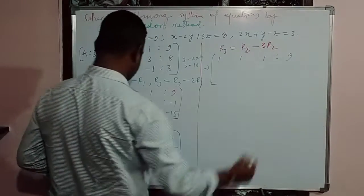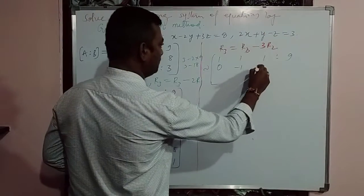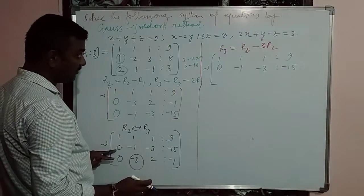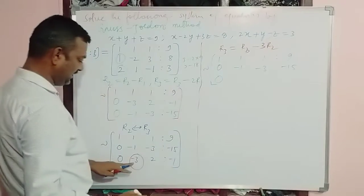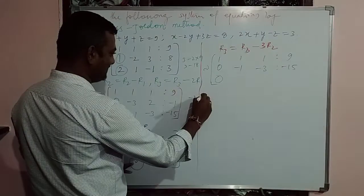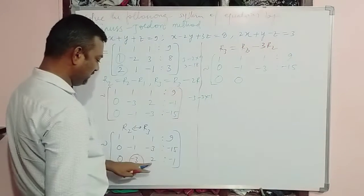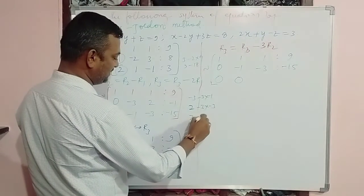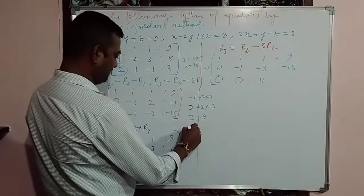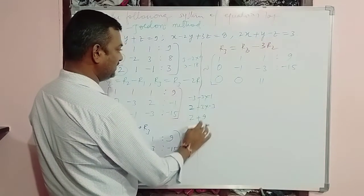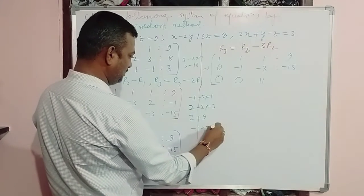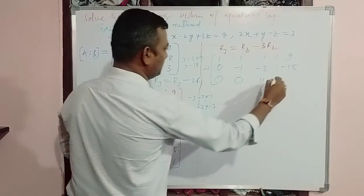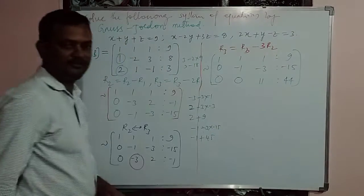After the operation R3 = R3 - 3×R2: Row 1 stays 1, 1, 1 | 9; Row 2 stays 0, -1, -3 | -15. For R3: 0, 0, then 2 minus 3×(-3) = 2 + 9 = 11, and -1 minus 3×(-15) = -1 + 45 = 44. So R3 = 0, 0, 11 | 44. Please try to concentrate — it's a very easy example.